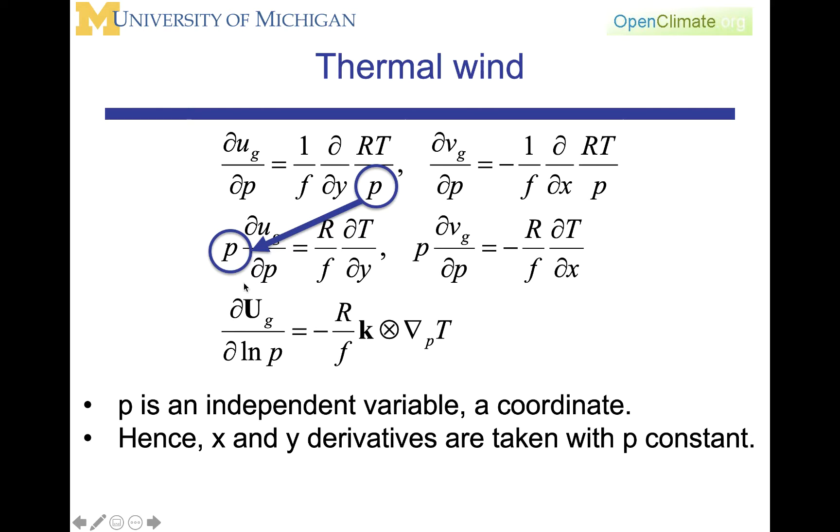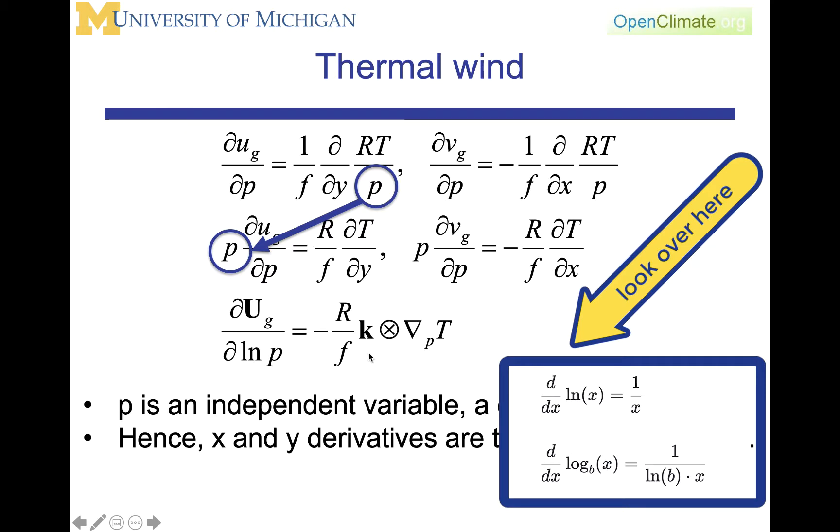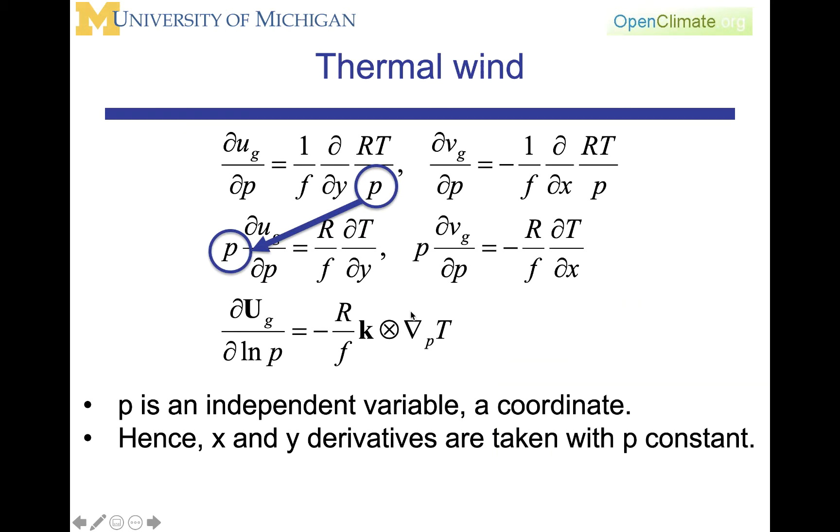Then we end up in vector form that the partial of the vector wind with respect to log p, because we are now going to recognize this p dp as representative of taking your variable and transferring it over to log p, is equal to minus R over f k cross del p of T, where this del p is representing the gradient on constant pressure surfaces.